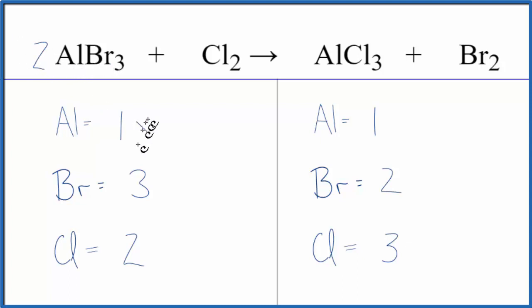One times two, I'll have two aluminum atoms, but for the bromine, two times the three here, that'll give me six. So that'll make it easy to fix the bromine atoms.